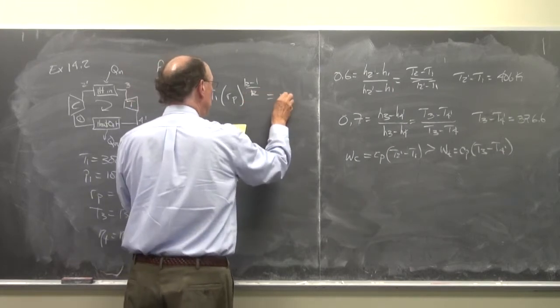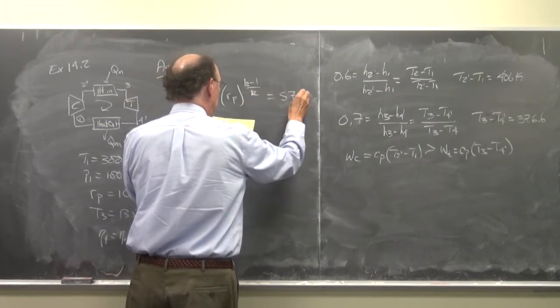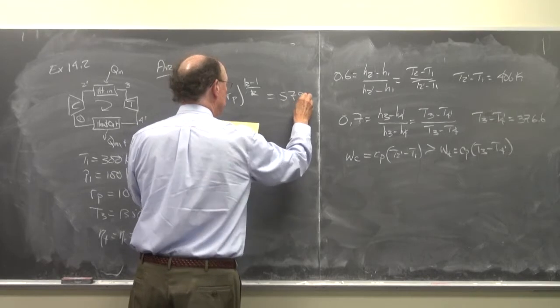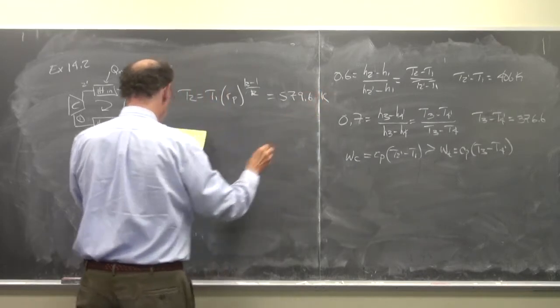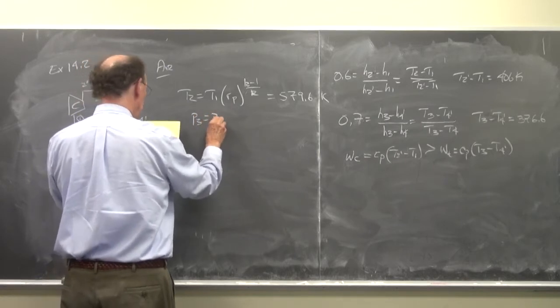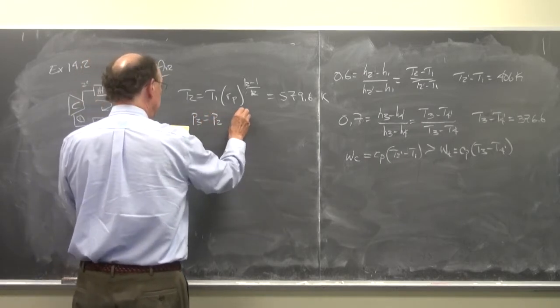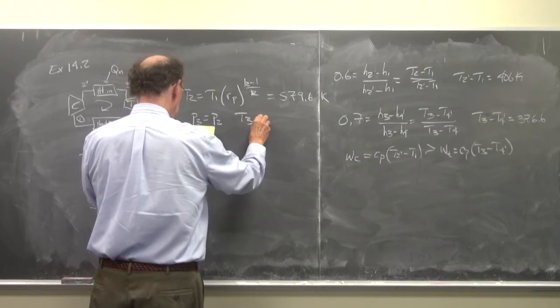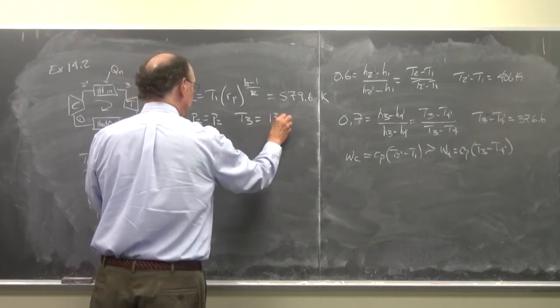And that's equal to 579.6 degrees K. p3 is equal to p2, T3 is equal to 1350 K.